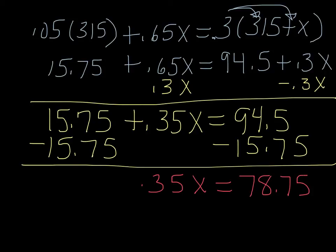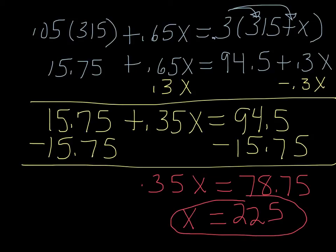Finally, we divide both sides by 0.35, and we get 225. So x represented how much of the 65% we were supposed to put in.